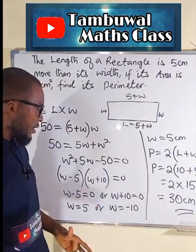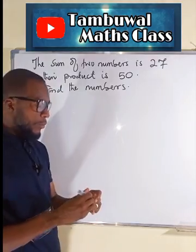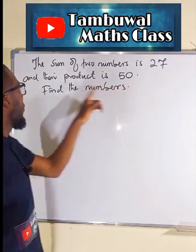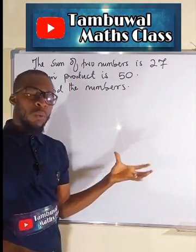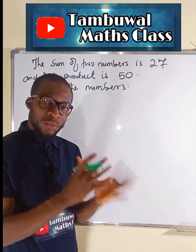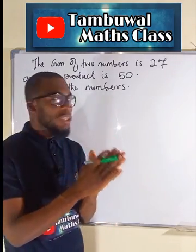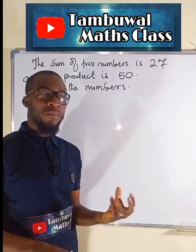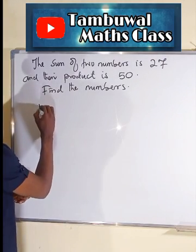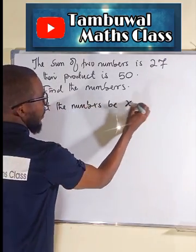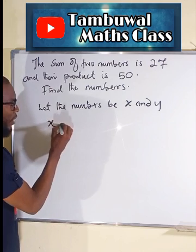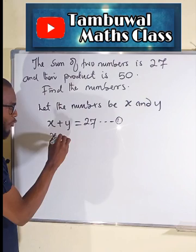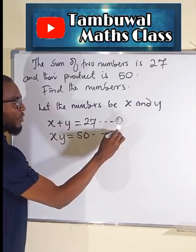Now let us look at the second question. It says the sum of two numbers is 27, while their product is 50 — we are asked to find the numbers. There are two particular numbers: if you add them together you get 27, and when you multiply them together you get 50. Since the numbers are unknown, let the numbers be x and y. The first equation: x plus y equals 27 — call this equation 1. The second equation: x times y equals 50 — equation 2.